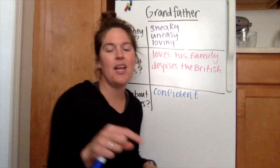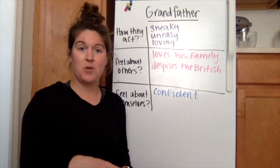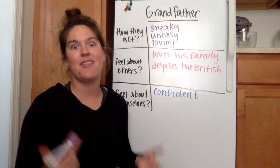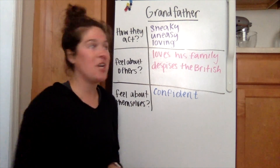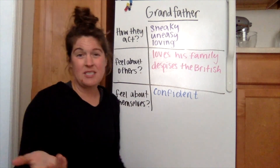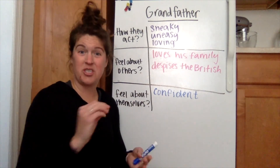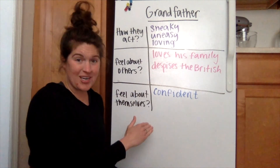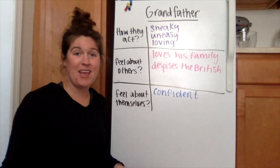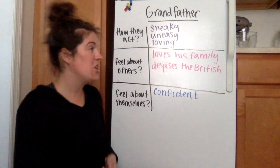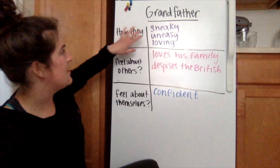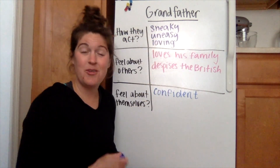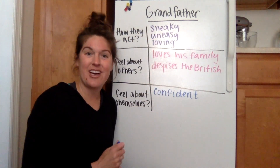Now it is going to be your turn. Click the next button on the module and you're going to give this a try for Ellen, the main character of the book. If you have a piece of paper, a whiteboard, or whatever to write on, go ahead and create this little chart — it'll help you write your response. You would then take this and write a complete sentence for each one. If you have questions, reach out to your teachers.